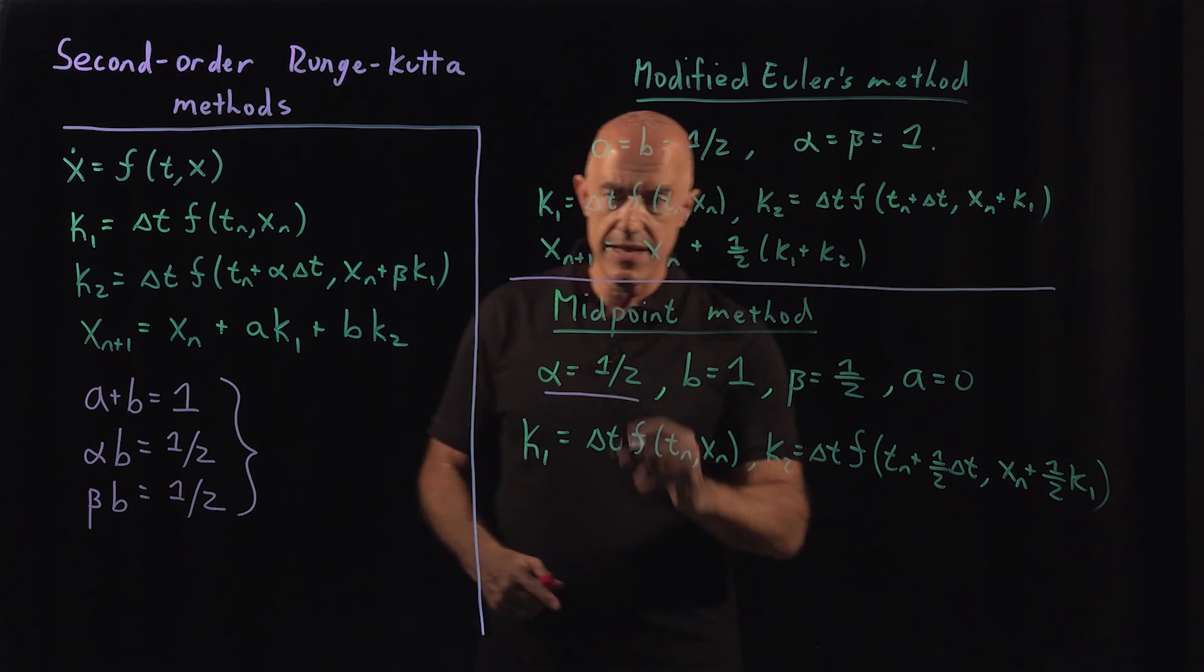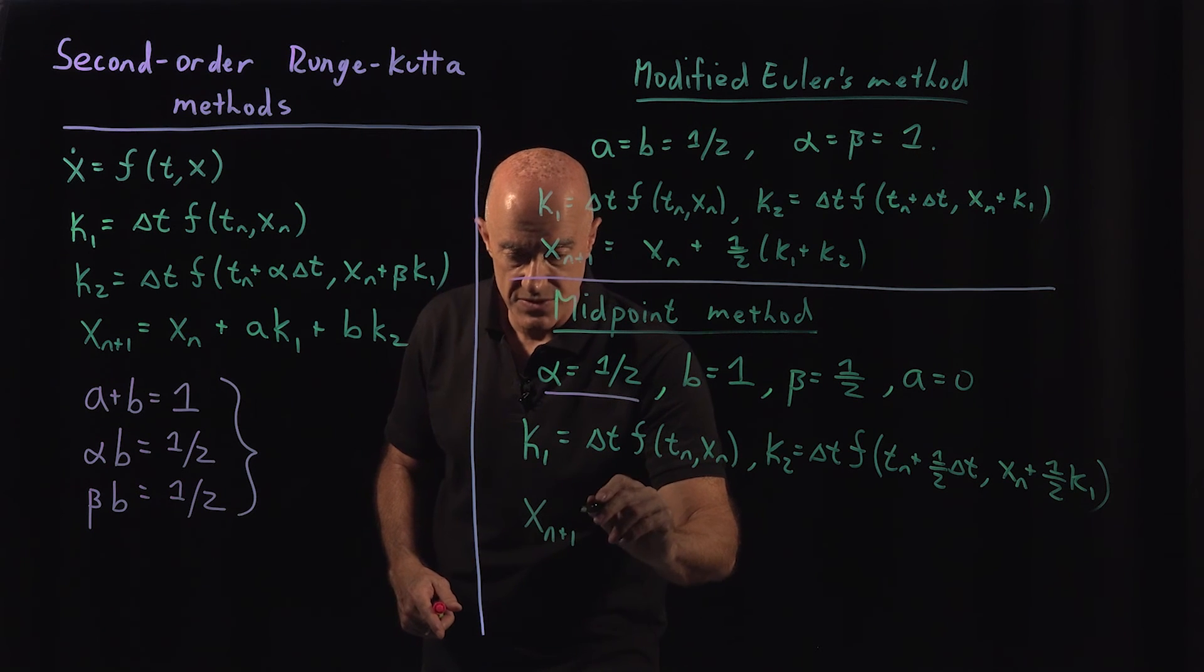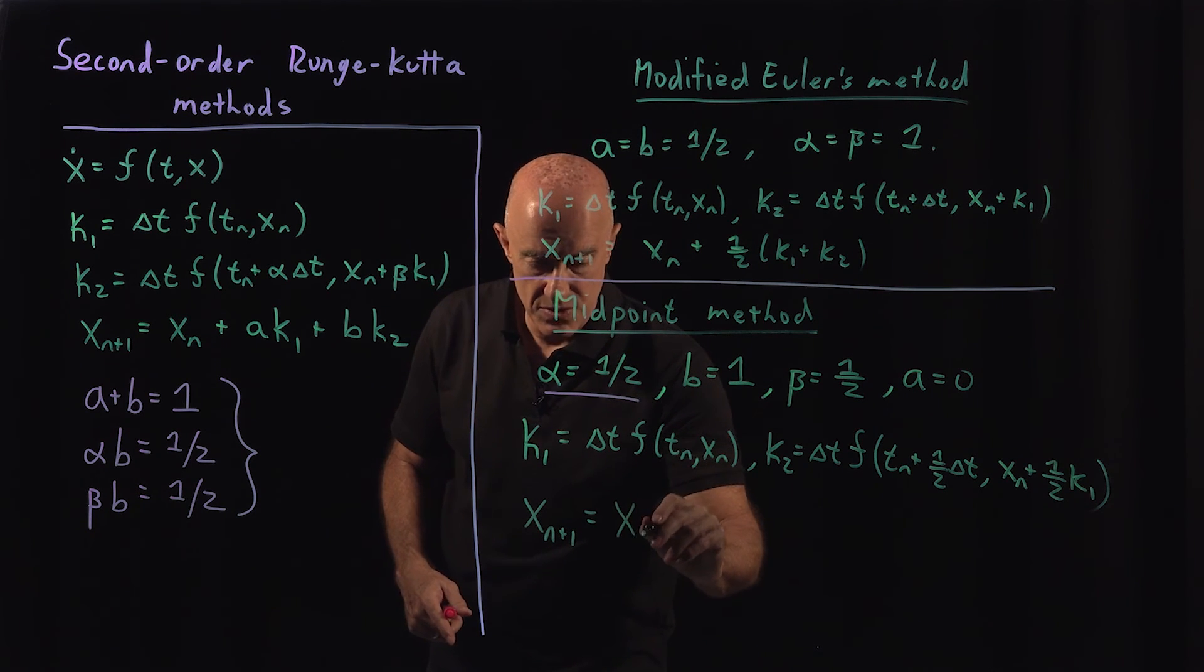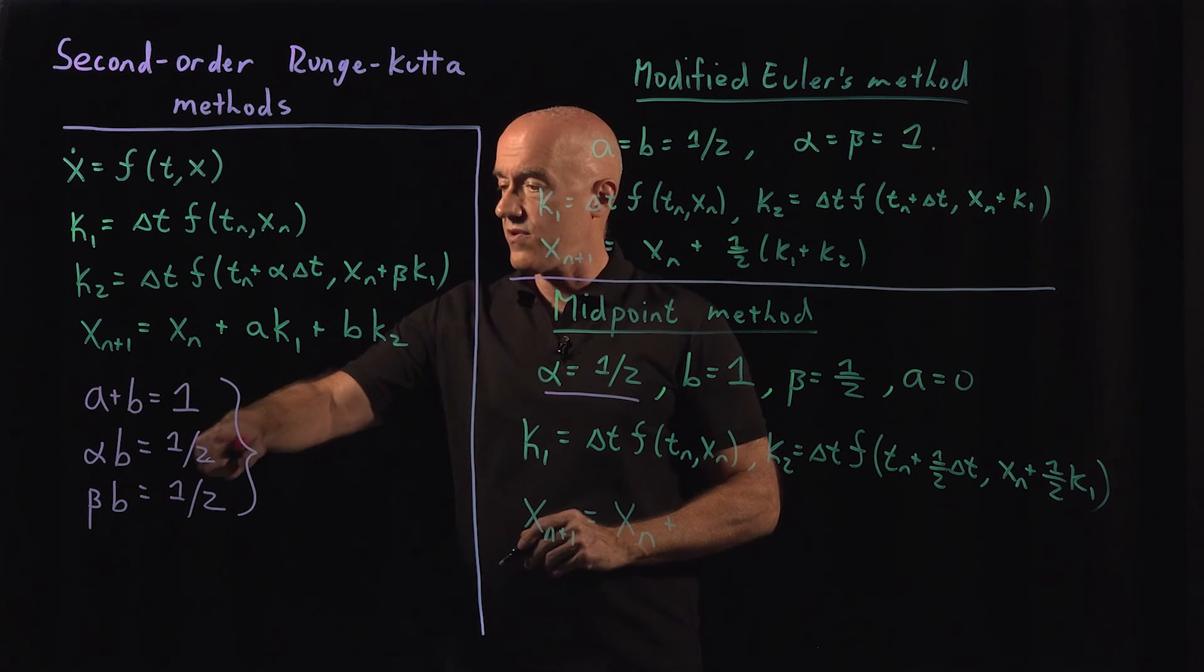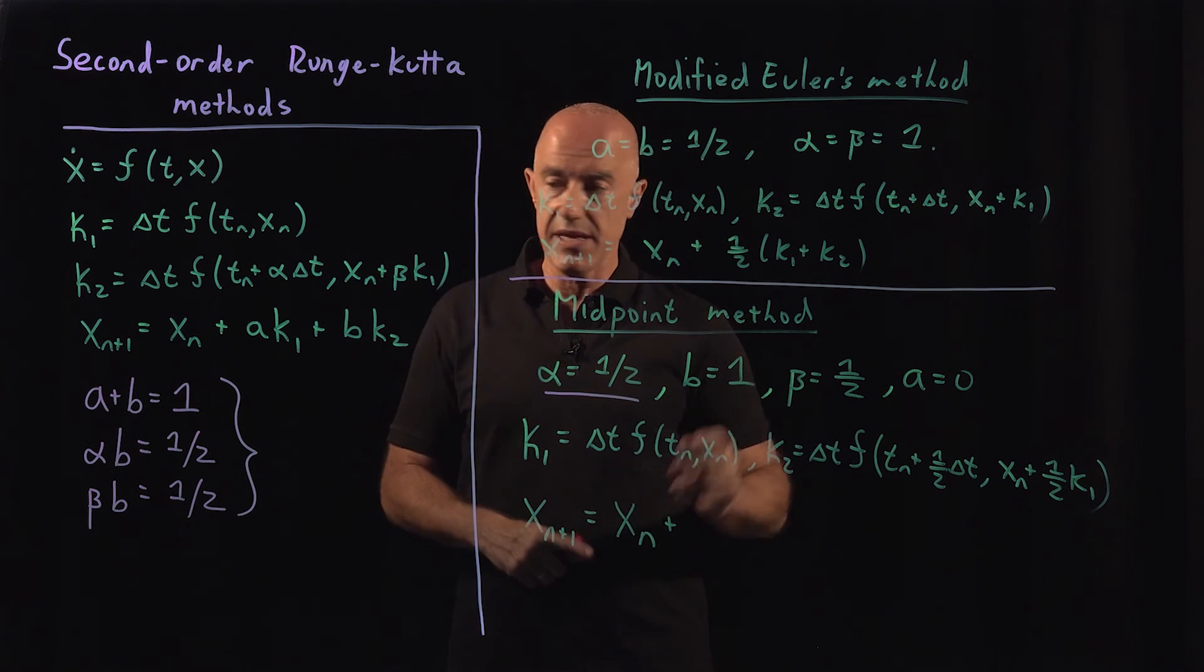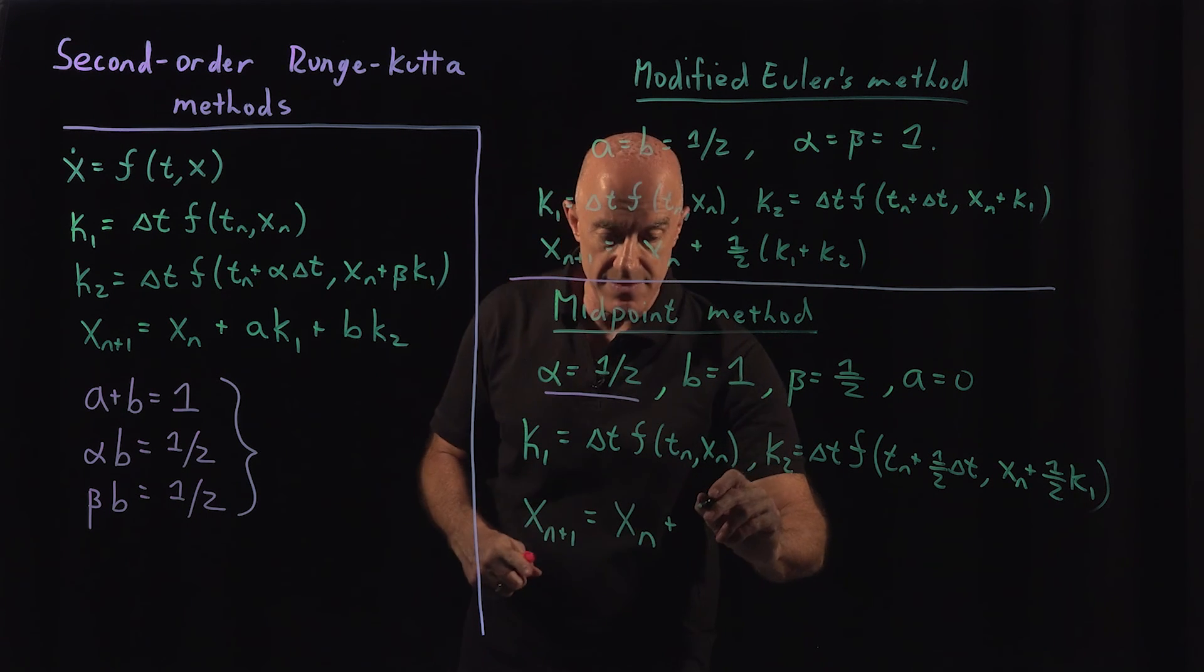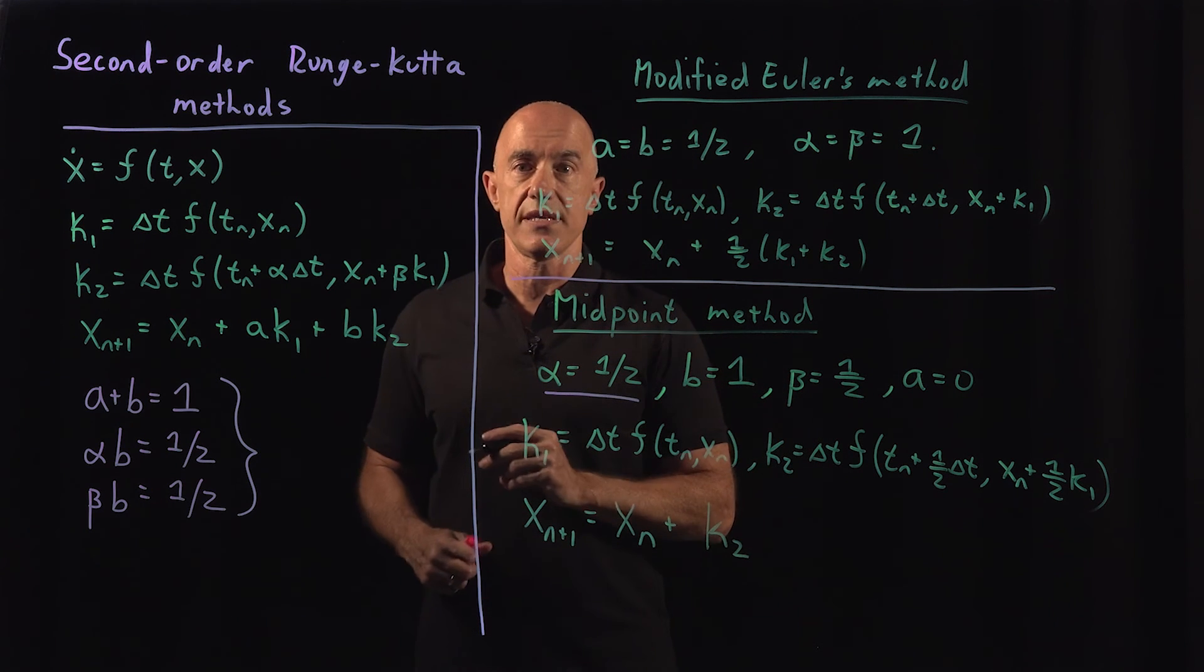And then our integration step, x_{n+1} is equal to x_n plus the value of a then is 0. And the value of b is 1, so it's just x_n plus all we need is k2 here, we don't need k1.